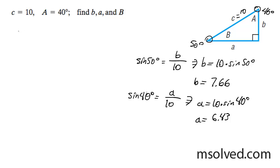So in conclusion, for side B we had 50 degrees, side A 6.43, and for side B 7.66. That's it.